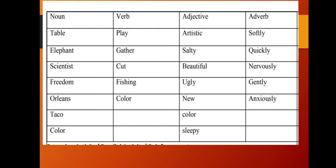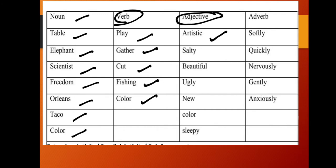Now let's classify these words. In noun we have: table, elephant, science, scientist, freedom, Orleans, taco, and color. In verb: play, gather, cut, fishing, and color. In adjective: artistic, salty, beautiful, ugly, new, color, and sleepy. In adverb: softly, quickly, nervously, gently, and anxiously.